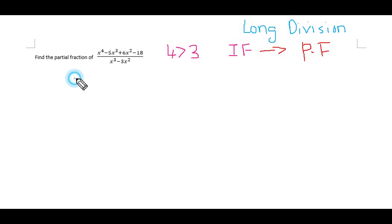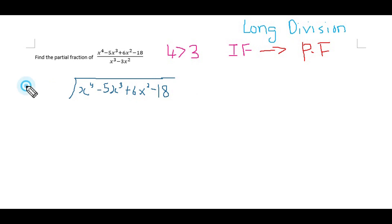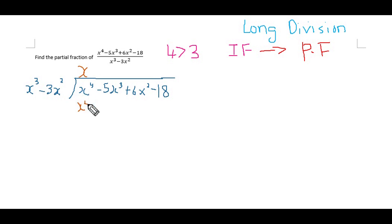We have to put the fraction into long division form. We have to cancel the x⁴ term, so we take x³ and multiply it by x to get x⁴. We multiply the whole denominator terms by x: x³ multiplied by x gives x⁴, and negative 3x² multiplied by x gives negative 3x³.